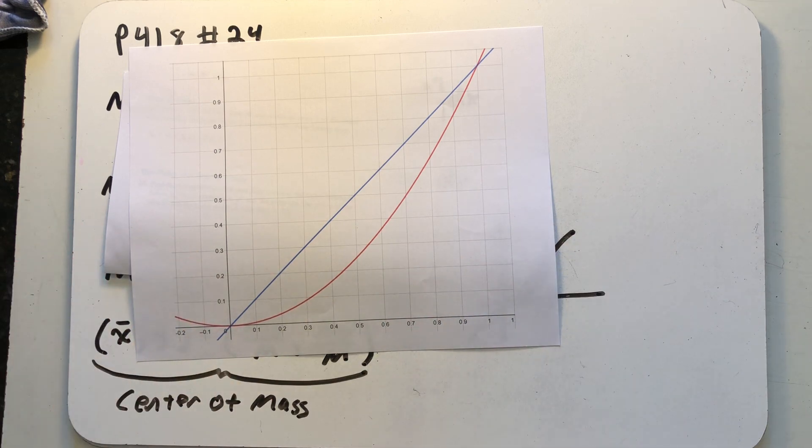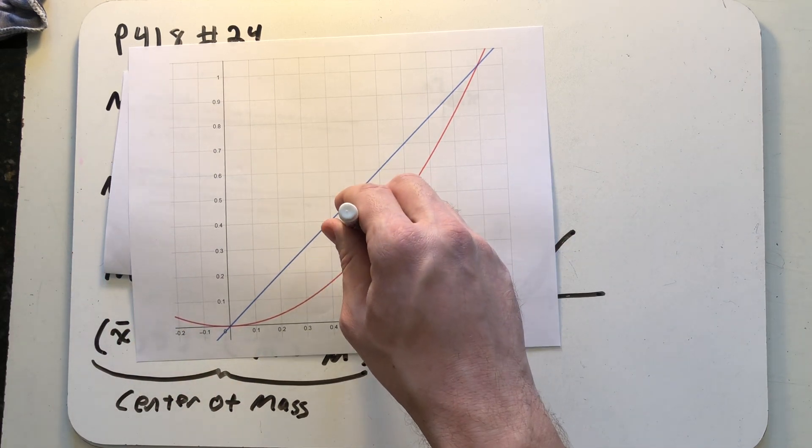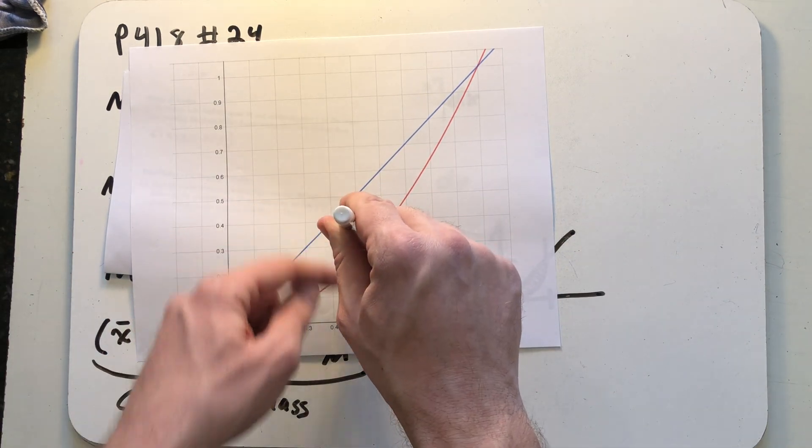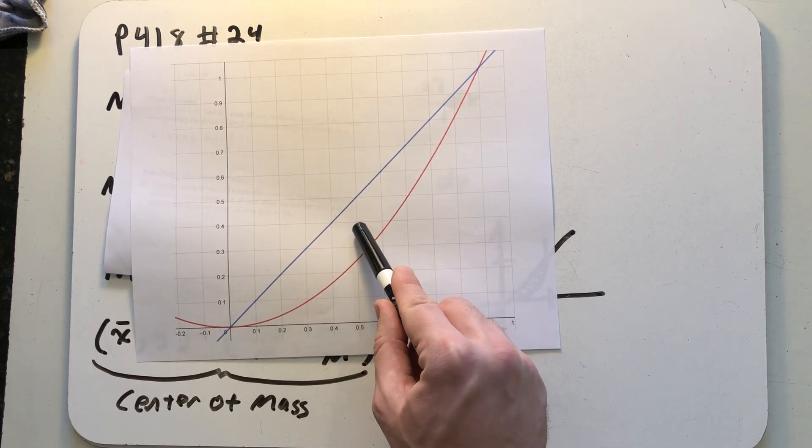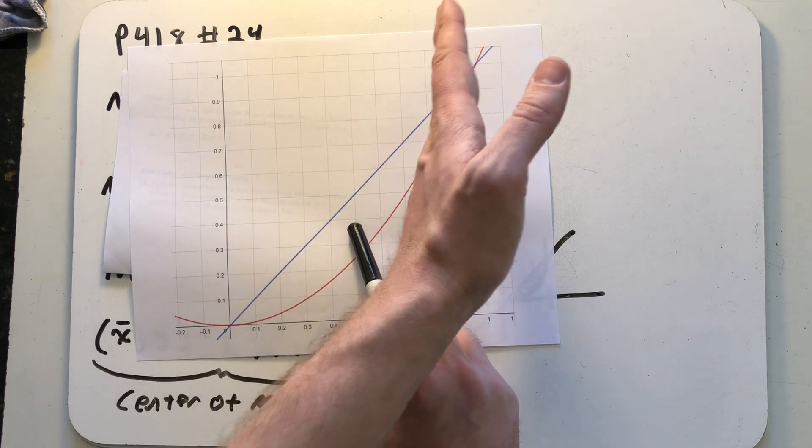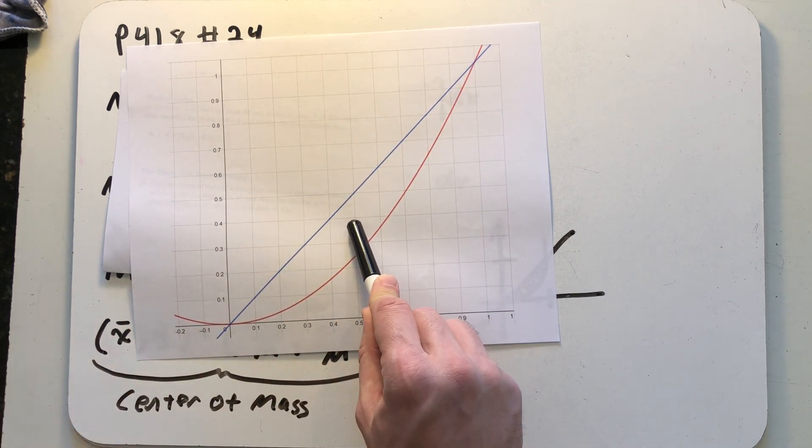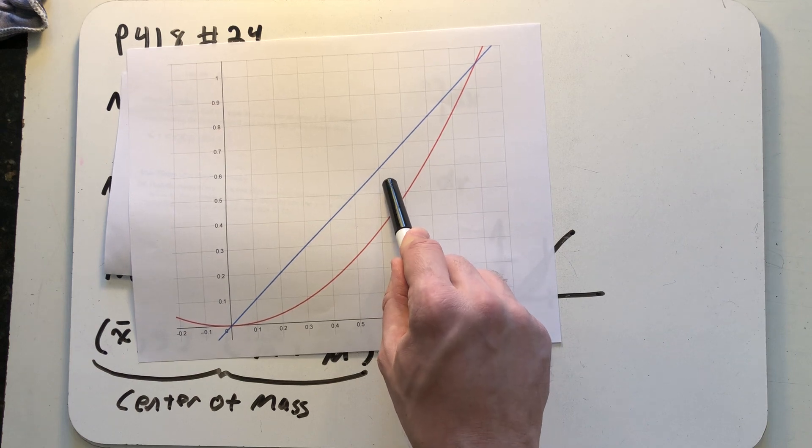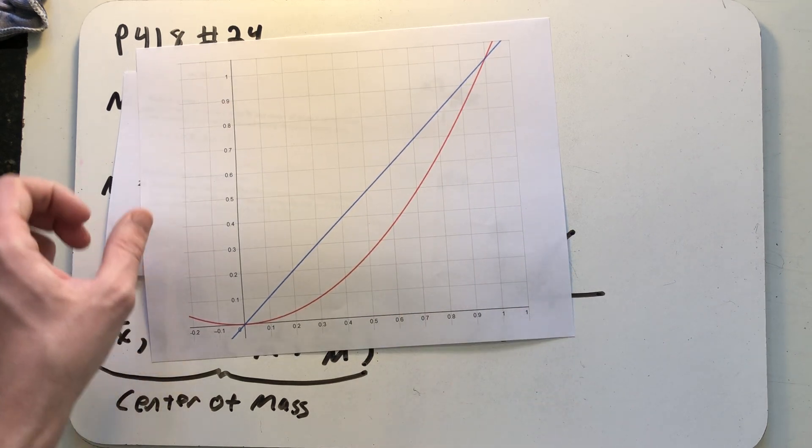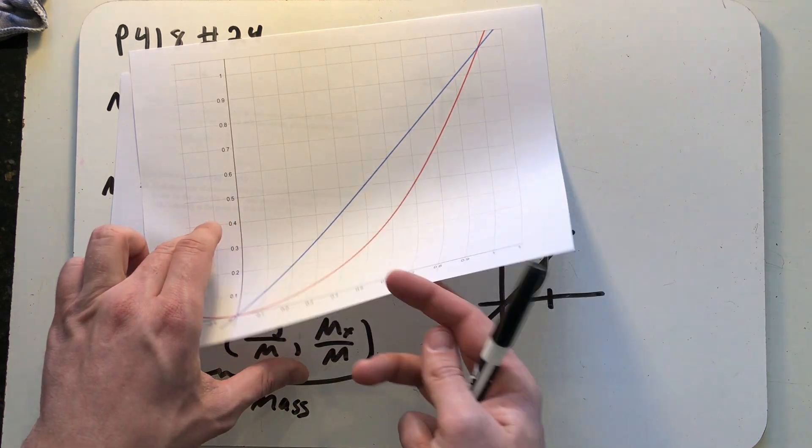If this had a uniform density I would expect the center of mass to be right here right between the blue and the red and right centered between the two intersection points. Because there's a higher density on the right hand side than the left I'm going to expect the center of mass to be pulled towards that higher density area and we're going to see if that bears out in the calculations.